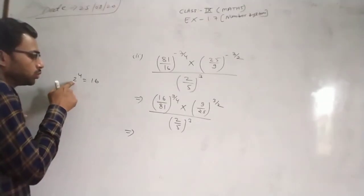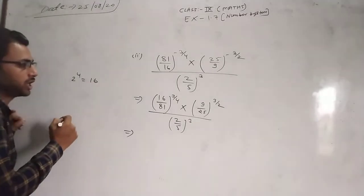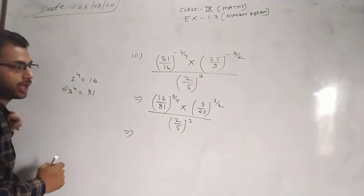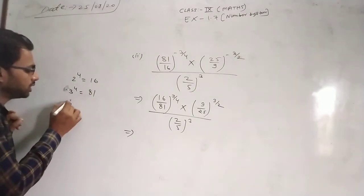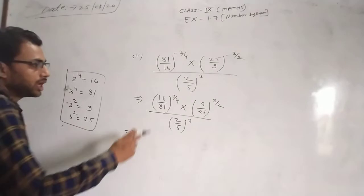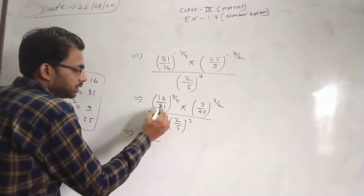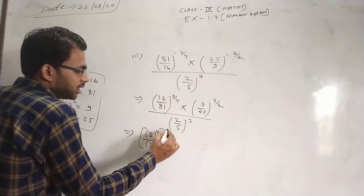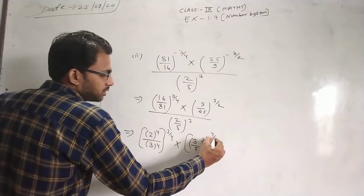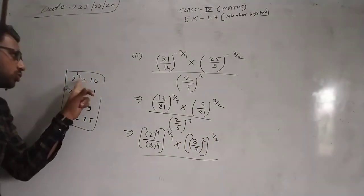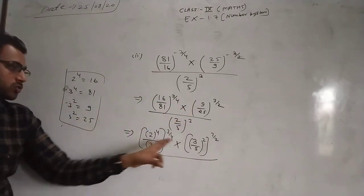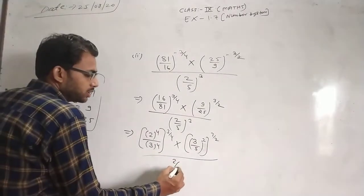Now, 16 — you can write 2 to power 4; 2 into 2 into 2 into 2, four times, is 16. You can write 3 to power 4: 3 into 3 into 3 into 3 is 81. This is 9, written as 3 squared; 25 written as 5 squared. So here we have 2 to power 4, and 81 is 3 to power 4, with whole power 3 by 4. Then 9 means 3 squared, 25 means 5 squared — so 3 upon 5 squared, all to power 3 by 2, and this gives 2 upon 5.